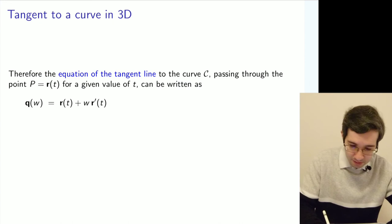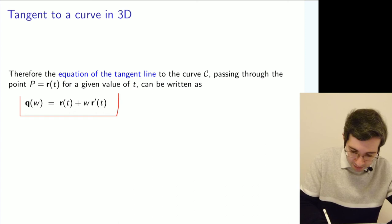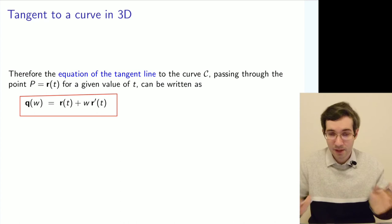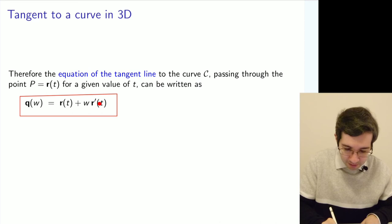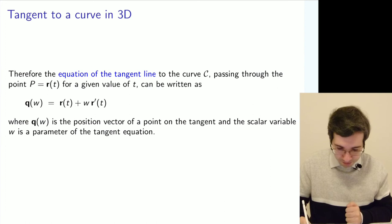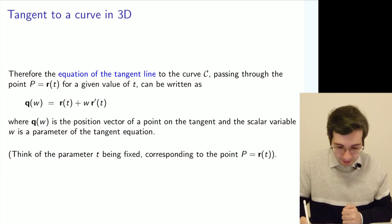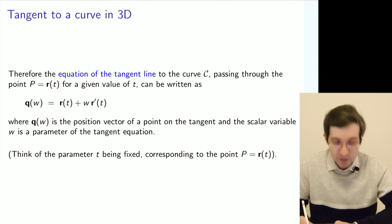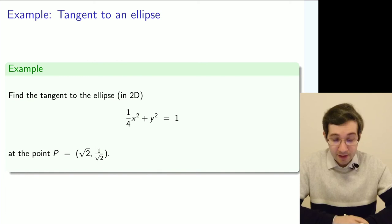This is how you get a tangent to any curve, doesn't matter what shape it has. As long as you can compute these pieces, the position vector, its derivative, and add a parameter, you can have that tangent line. q is just a position vector and w is a new parameter. It's very similar to what we've seen before. We had the t, but now it's a different parameter.